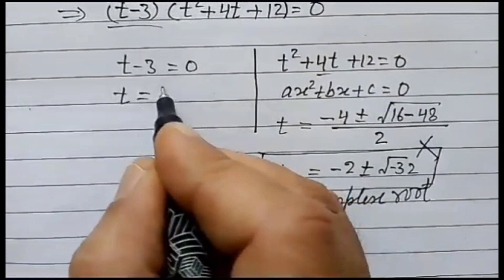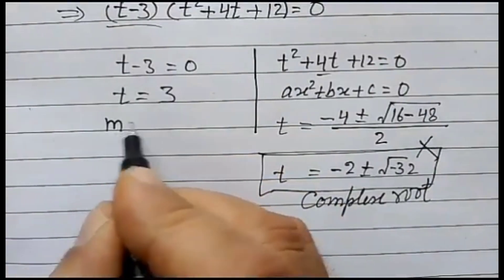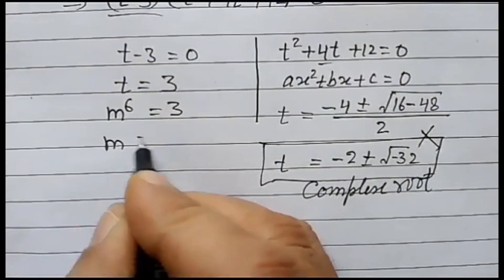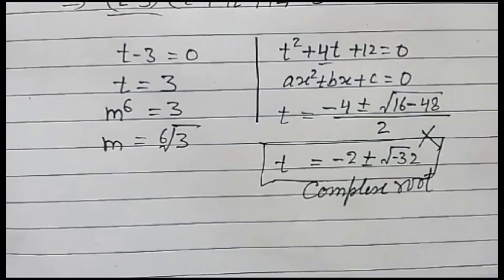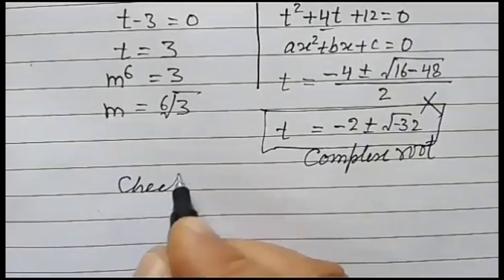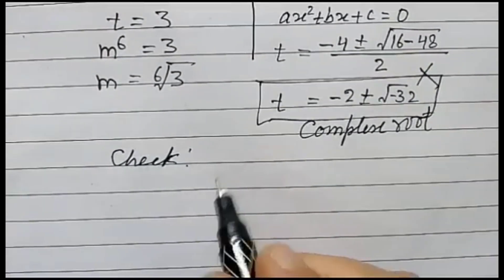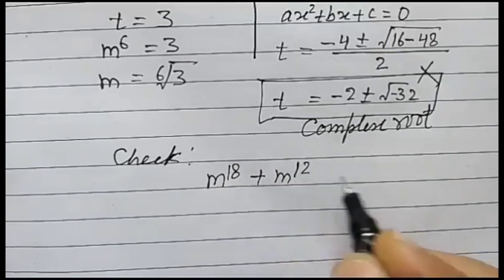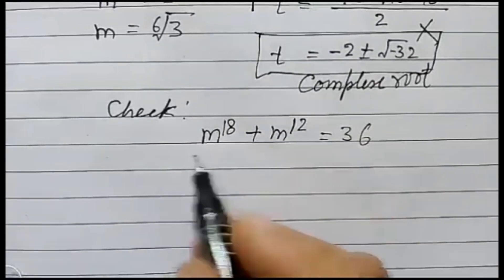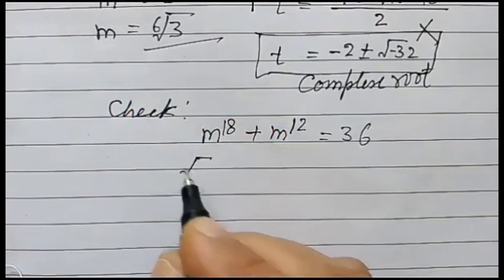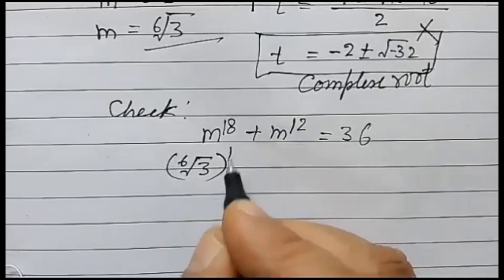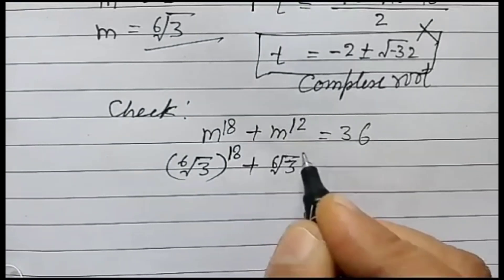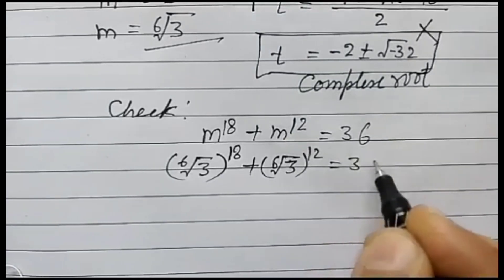So we go with t equal to 3. Since we assumed m to the power 6 equals t, we have m to the power 6 equals 3. Therefore m is equal to the 6th root of 3. Let's verify: substituting into m to the power 18 plus m to the power 12 equals 36, we get the 6th root of 3 to the power 18 plus the 6th root of 3 to the power 12.